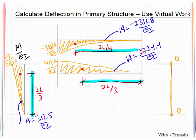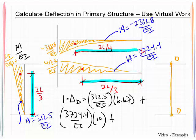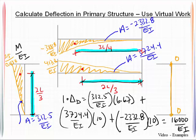I am now prepared to put together my computation for the displacement at D. So 312.5 over EI times 6.67, plus 3724.4 over EI times 10, plus a negative 2332.8 over EI times 10. And this will be equal to a positive 16,000 over EI. So that is simply the displacement that occurs in the primary structure.